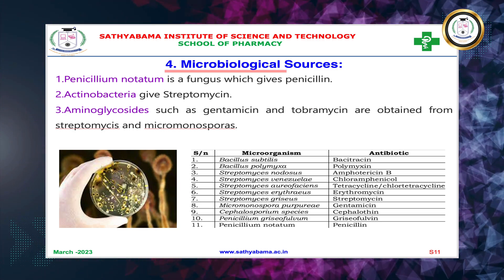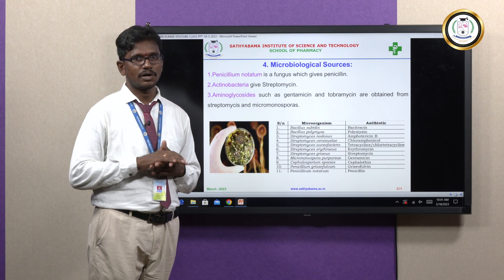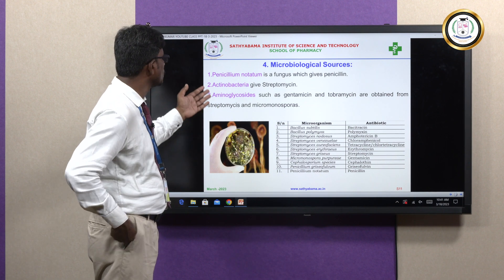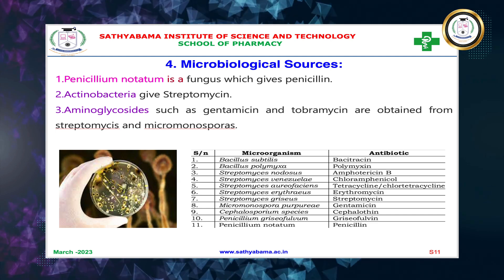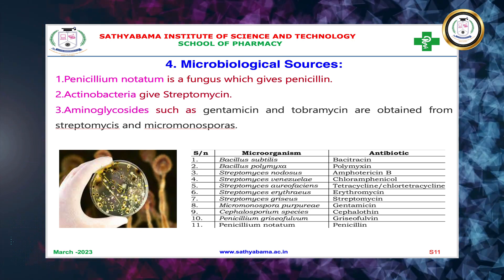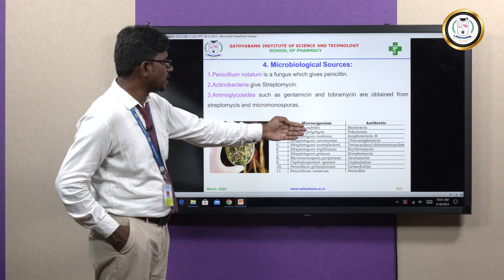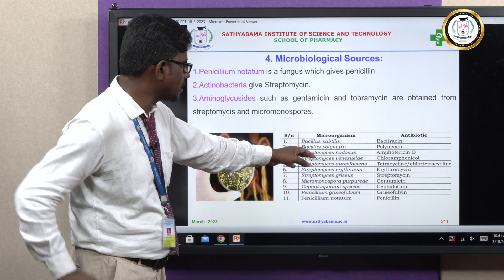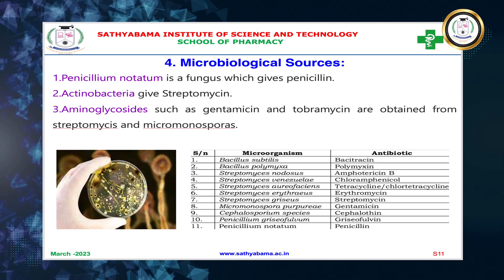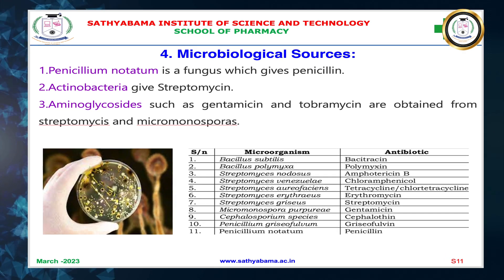Microbiological sources: when we face microbial infections we take antibiotics, and we get antibiotics from microorganisms themselves. Penicillium notatum is a fungus — the oldest drug source — which gives penicillin. Actinobacteria gives streptomycin. Aminoglycosides such as gentamicin and tobramycin are obtained from Streptomyces and Micromonospora. Bacitracin is obtained from Bacillus subtilis; polymyxin from Bacillus polymyxa; amphotericin B from Streptomyces nodosus; chloramphenicol from Streptomyces venezuelae; tetracycline from Streptomyces aureofaciens; and erythromycin from Streptomyces erythreus.